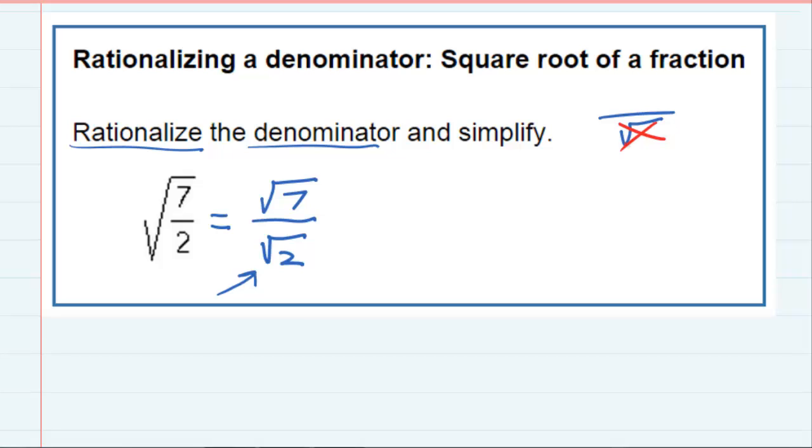So, to fix this square root of 2 in the bottom, I'm going to take my fraction and multiply by another fraction. Since I'm trying to fix the square root of 2, both the top and the bottom of my fraction here are going to be the square root of 2.